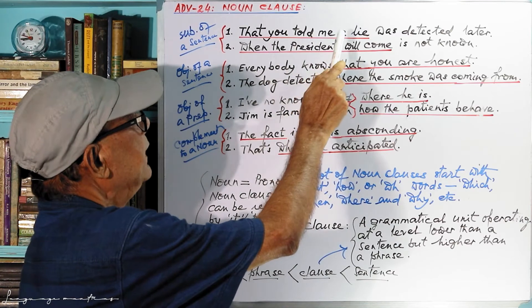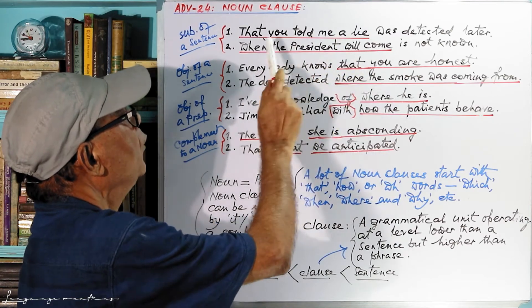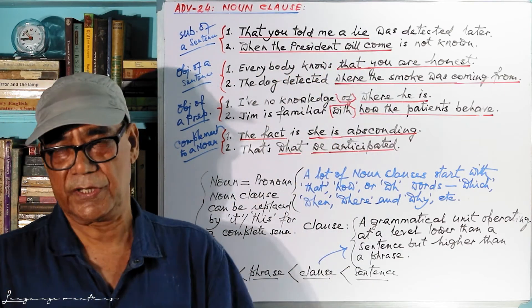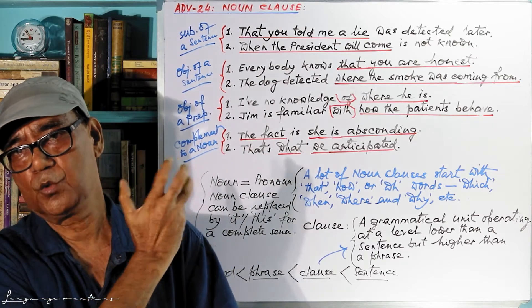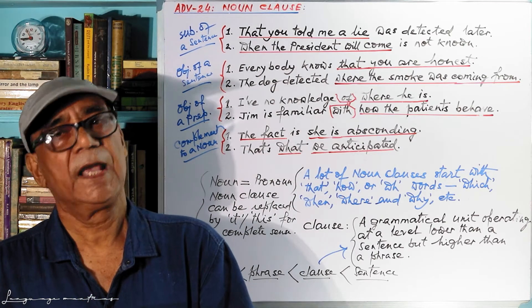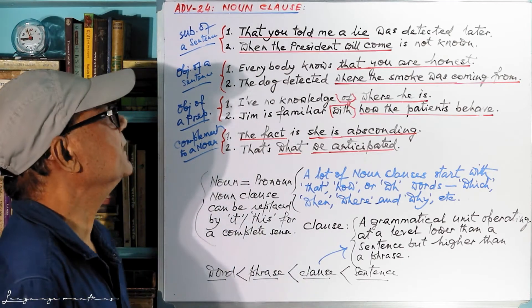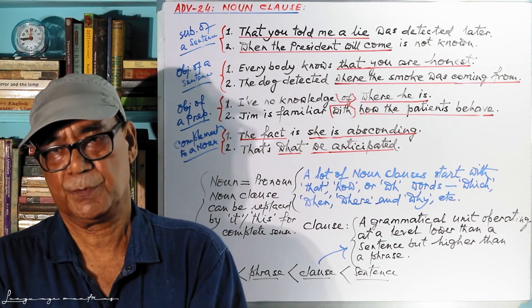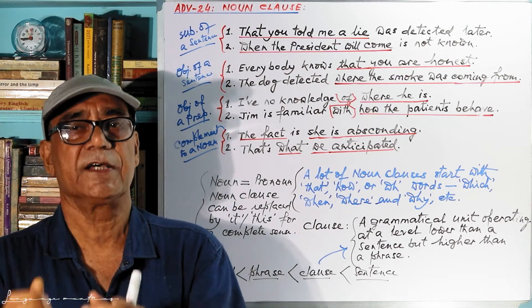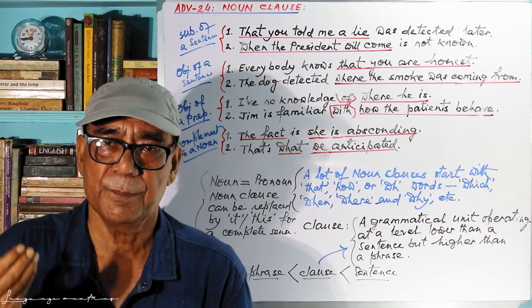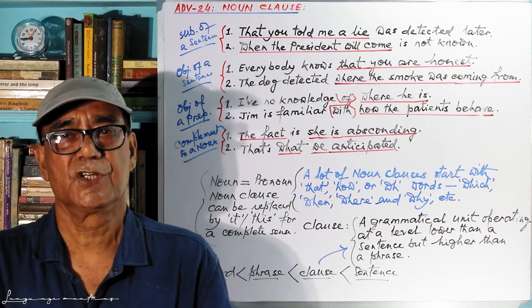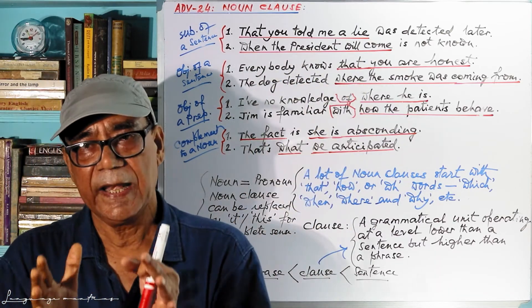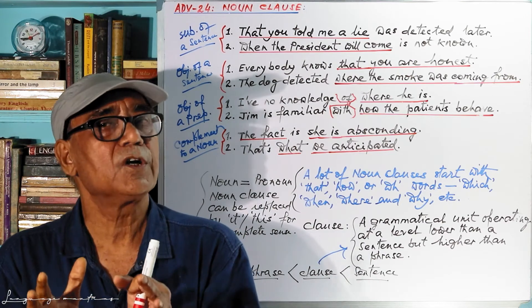"That you told me a lie" — six words appear. There are six words and more than three or four parts of speech, and they come together to serve the purpose of a noun. That's why this is called a noun clause.